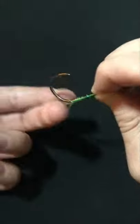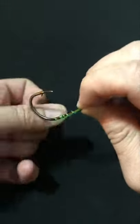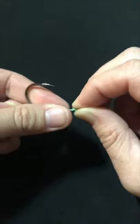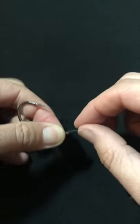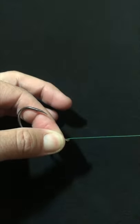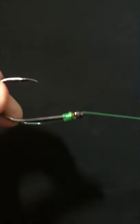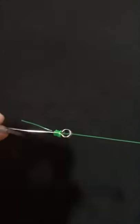Do as many wraps as you feel you need. Then what you're going to do is grab a hold of your wraps with this hand and just hold them in place, and then just pull on that main line. And there you go.